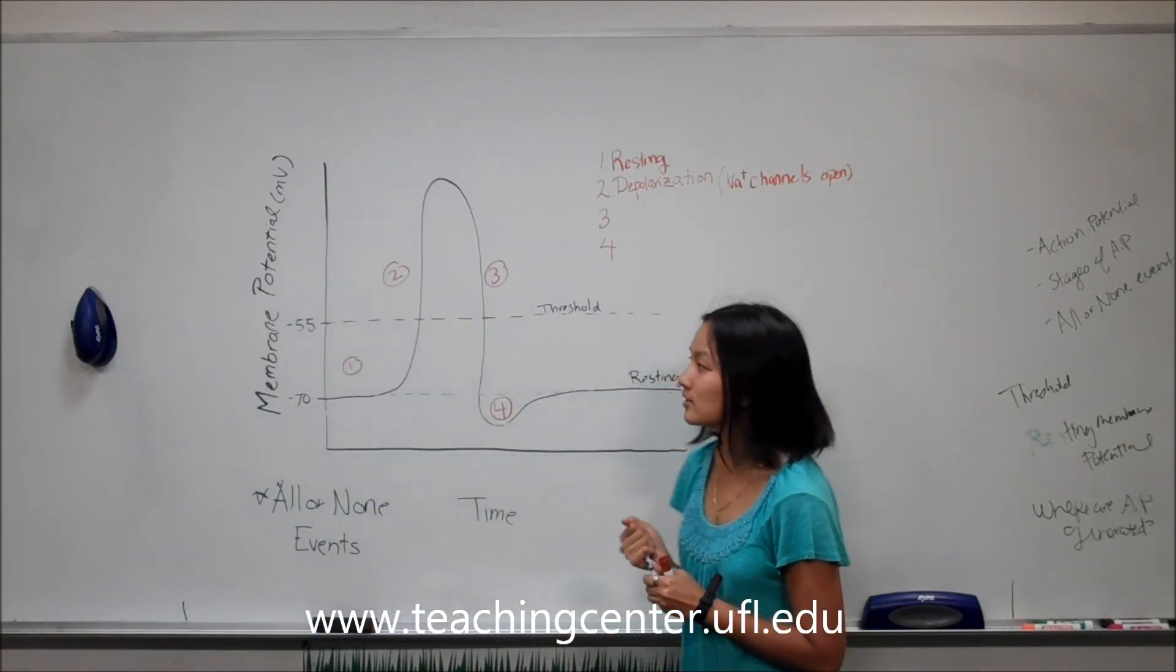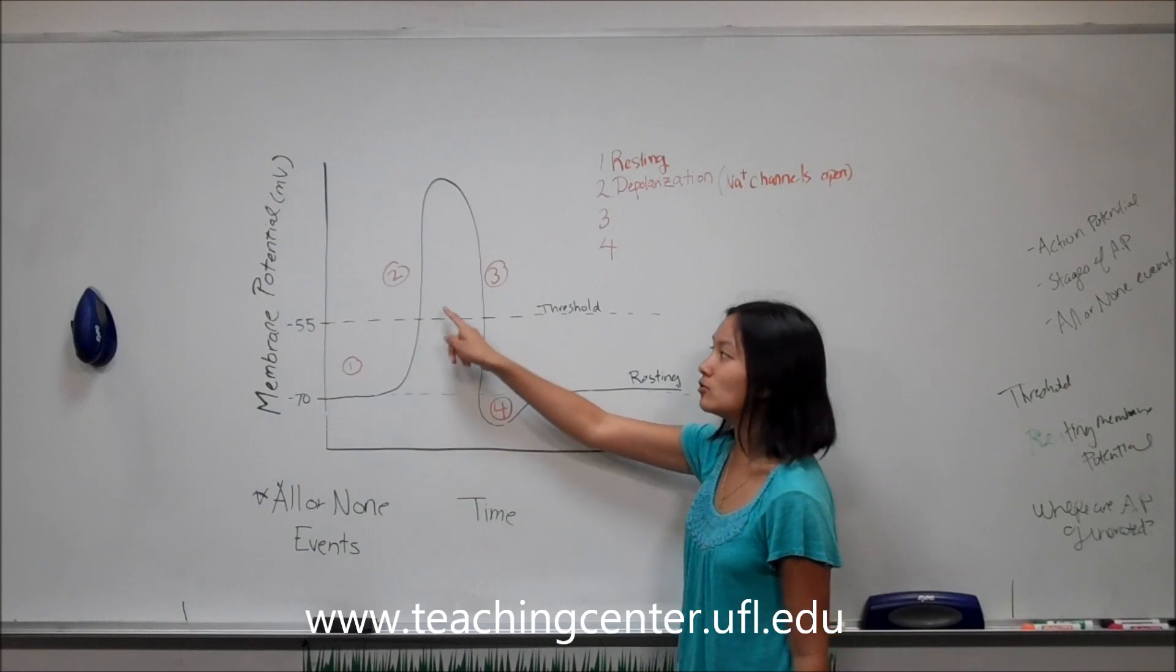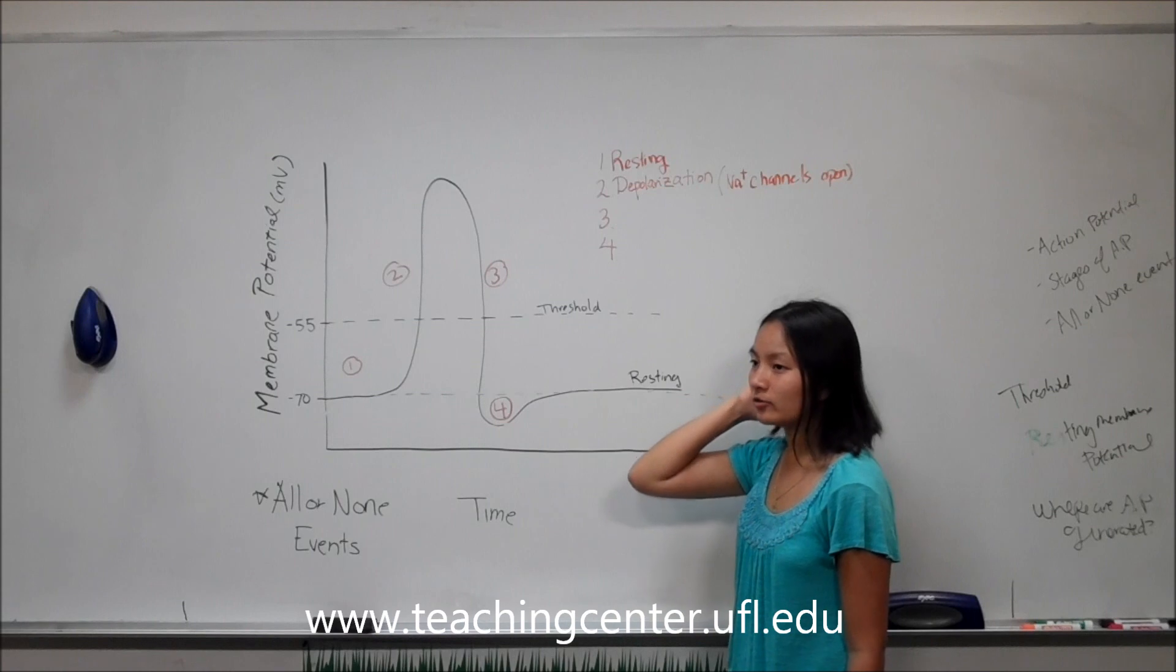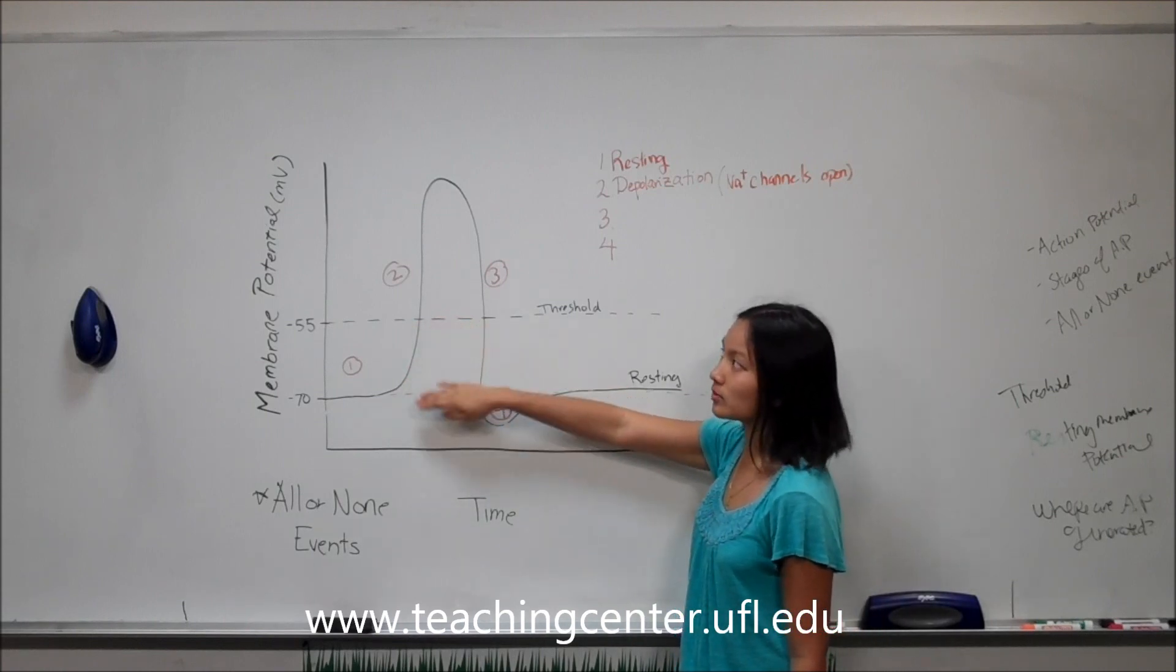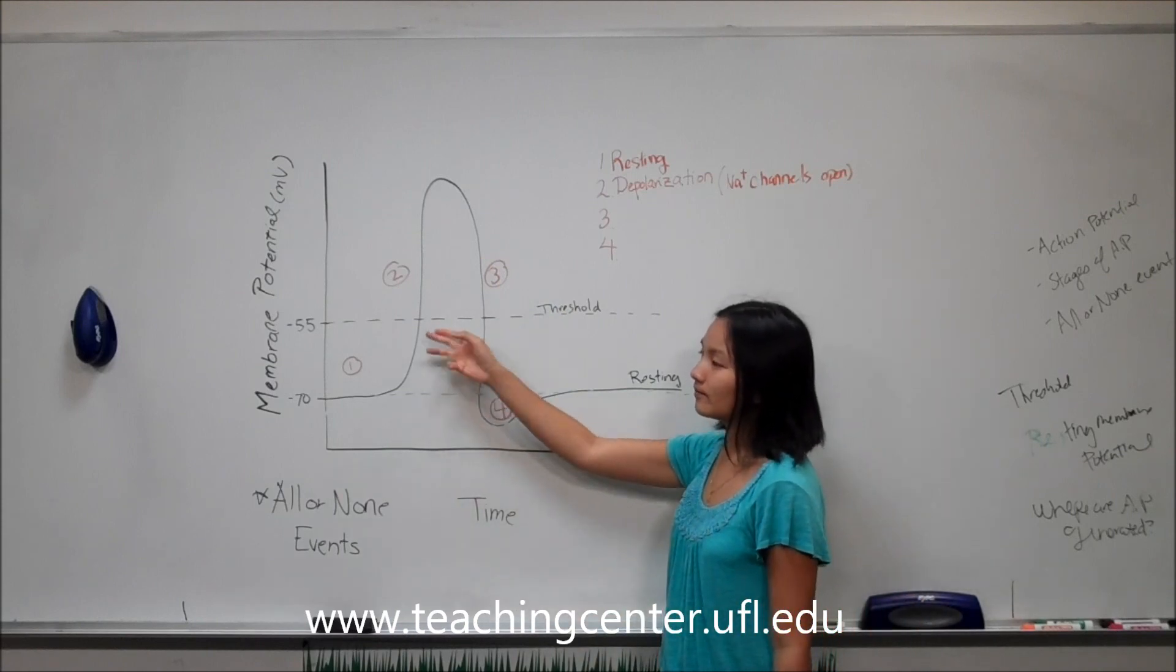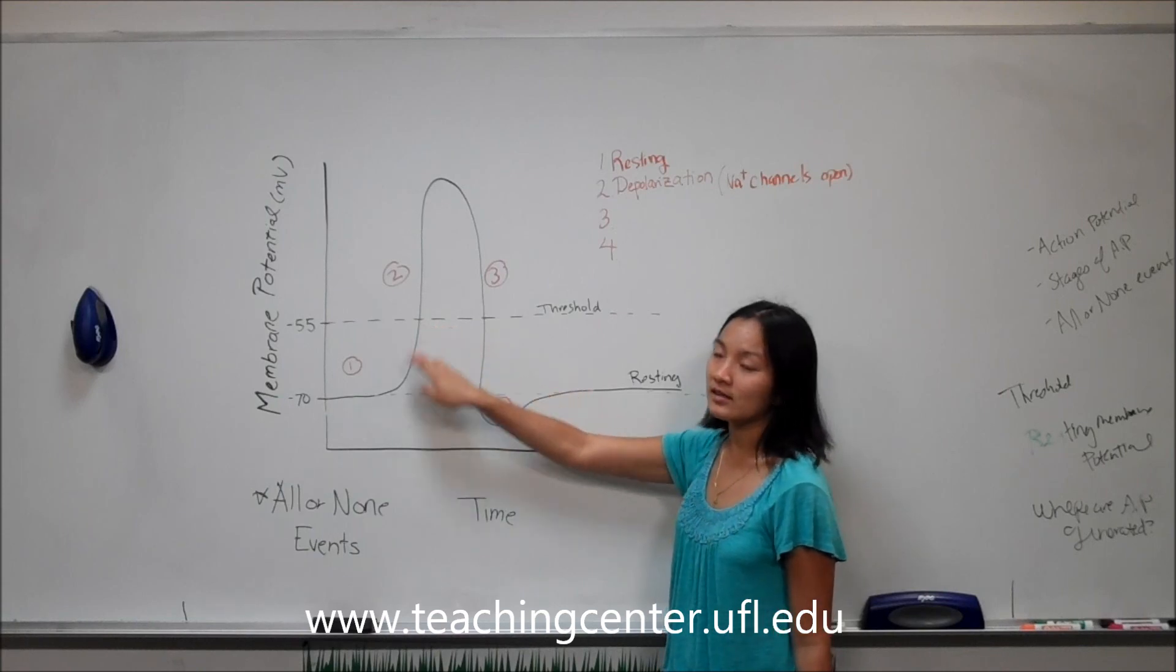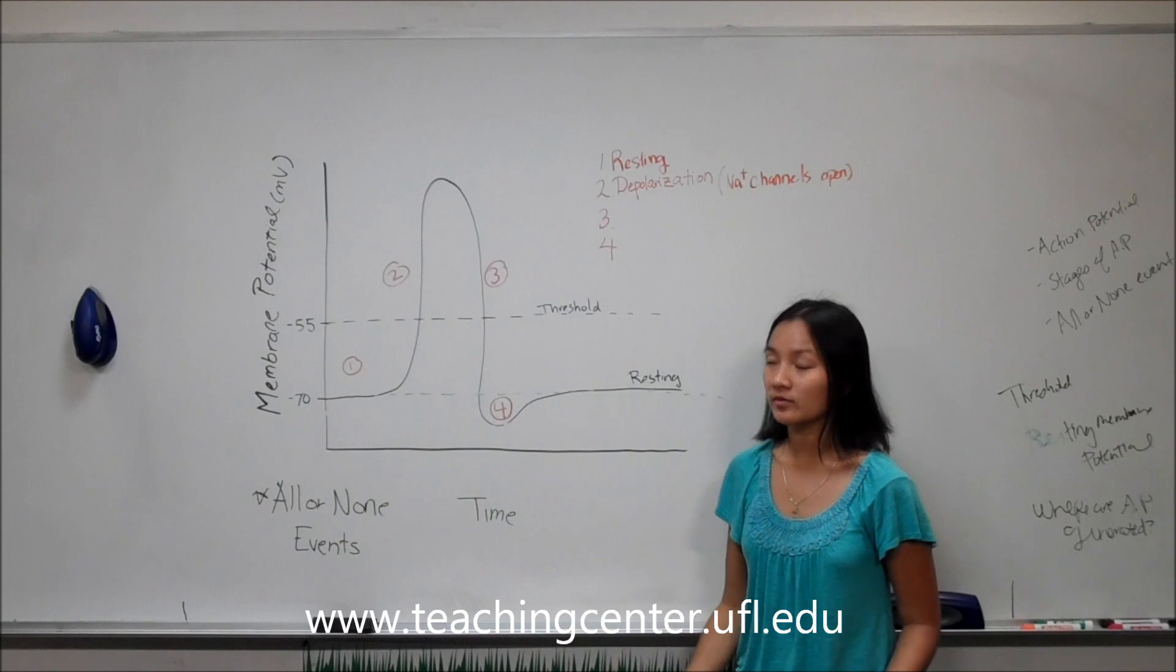Even if you get enough stimulus that maybe you only reach negative 56, if you don't hit threshold, you won't have an action potential. And no matter, like maybe you had enough stimulus to go a little bit above threshold, you still generate the same action potential, even if it only compared to an action potential that only hit negative 55. So your action potential will be the same no matter what in the nervous system.